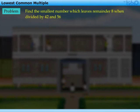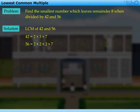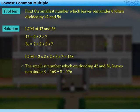Let us now solve some problems by applying the concept of LCM by prime factorization. Find the smallest number which leaves remainder 8 when divided by 42 and 56. We should first find the smallest number which is divisible by 42 and 56. That will be the LCM of 42 and 56, which comes out to be 168. Therefore, the smallest number which on dividing by 42 and 56 leaves remainder 8 is equal to 168 plus 8, which is equal to 176.